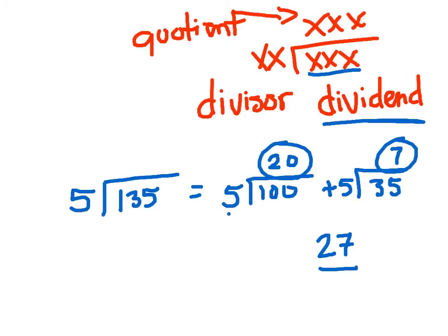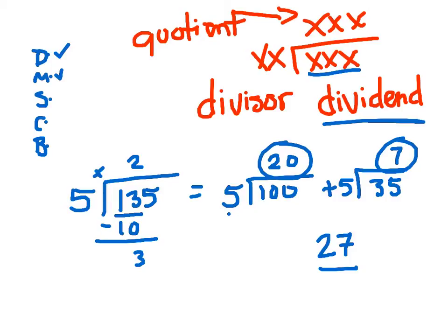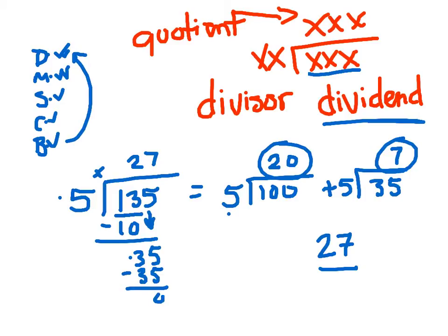But just for fun, let's go ahead and solve this using DMSCB — divide, multiply, subtract, compare, bring down. 5 goes into 13 two times. Multiply: 2 times 5 equals 10. Subtract to get 3. Compare: 3 is less than 5, so we bring down the 5. Now 5 goes into 35 seven times. Multiply: 7 times 5 is 35. Subtract: 0. Compare — yes, less than 5. Nothing left to bring down. This 27 equals this.